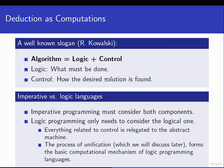In contrast, logic programming only needs to consider the logic part. The control part is really relegated to the abstract machine — to the system that implements the logic programming language itself. The interpreter takes care of the control part. And there is a certain process called unification, which we will discuss later, which forms the basic computational mechanism of logic programming languages.